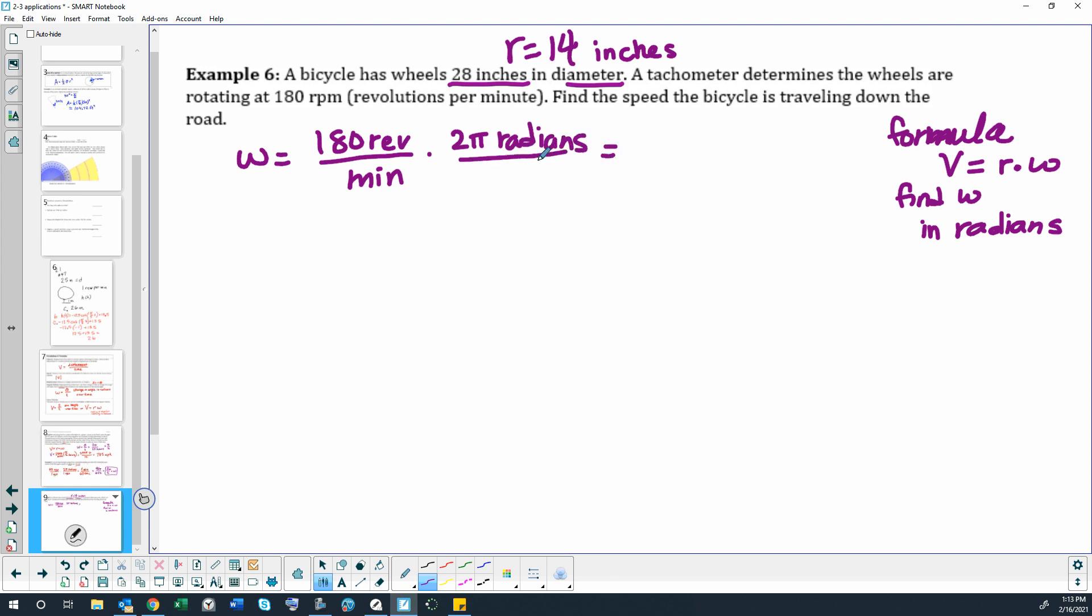We multiply this together. Get in the habit of doing these conversion factors that cancel out. So that will give us 360π radians per minute.